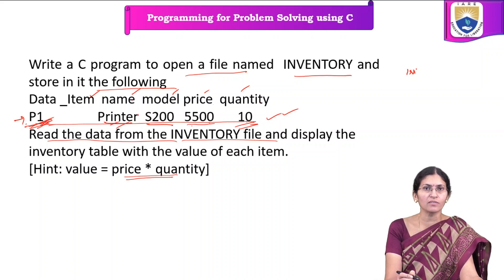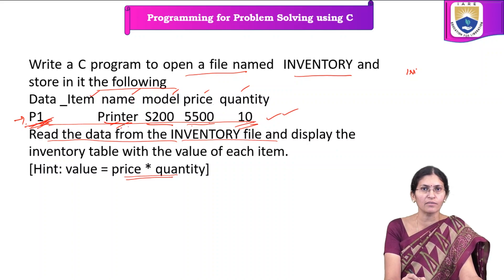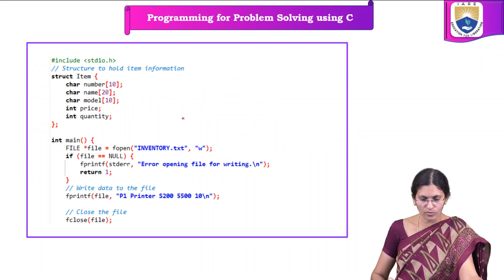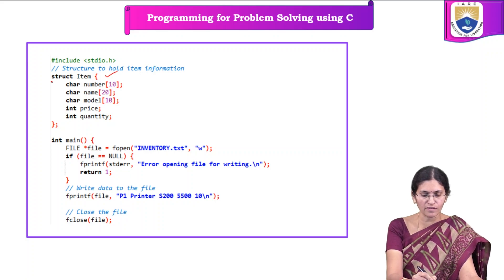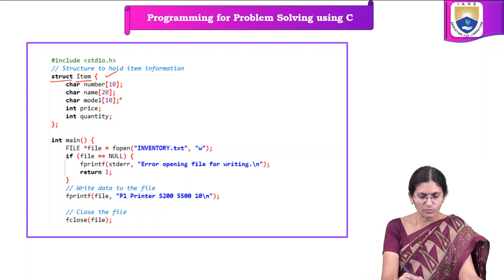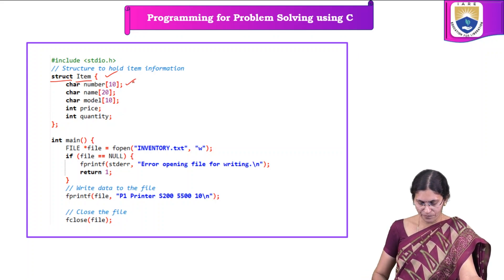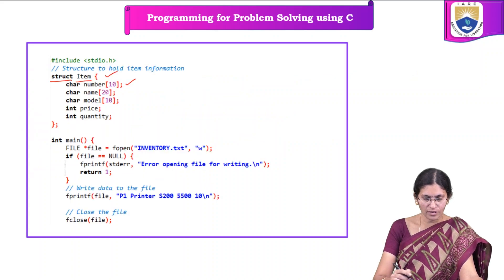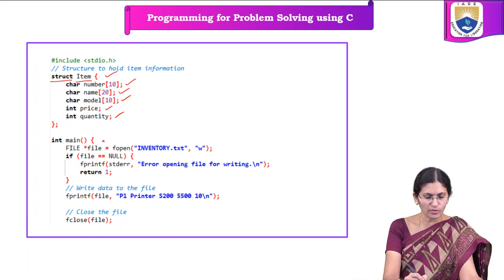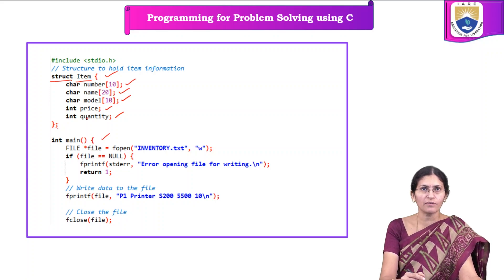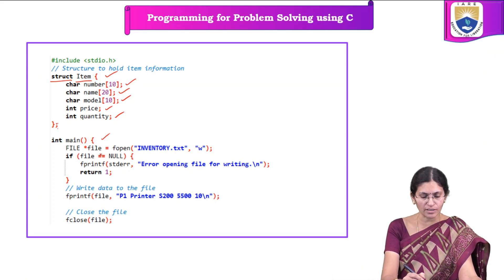Since each record consists of fields with different data types — character arrays for item number, name, and model, and integers for price and quantity — we can use a structure to hold all the information. We define a structure with the keyword 'struct' and name it 'item'. Inside, there are five fields: a character array for number, a character array for name, a character array for model, an integer for price, and an integer for quantity. The structure is defined outside main, and the variable will be declared inside the main function.